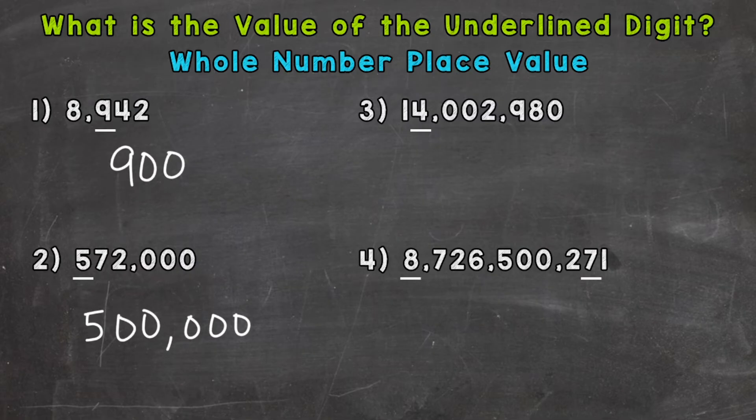On to number three, where we have 14,002,980. And we have a 4 underlined. So let's think about what place that 4 is sitting in. And it's sitting in the millions place. Therefore, that 4 has a value of 4,000,000. So let's write out 4,000,000. Make sure you have enough zeros here. And there's our value of the 4.